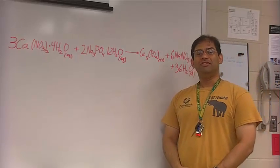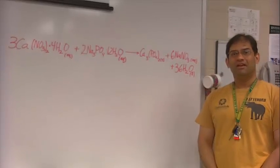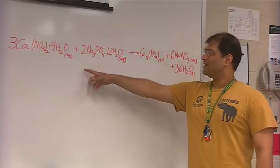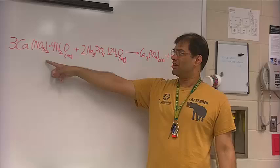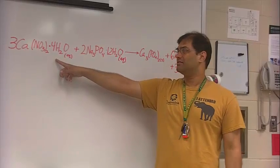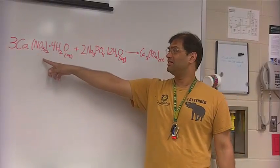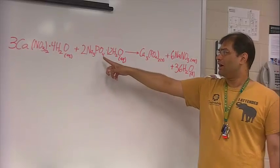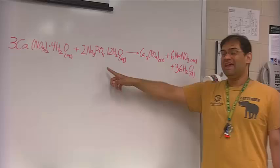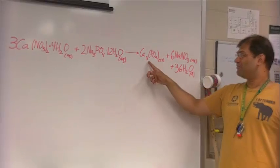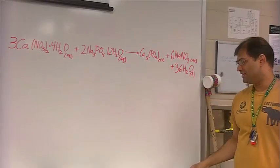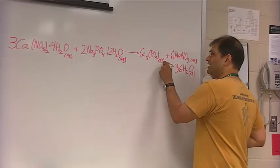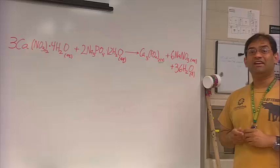In this lab, you will be determining the limiting reagent of the reaction. This is the reaction that you will perform. You'll take some calcium nitrate tetrahydrate, so four waters are complexed to this, react it with some sodium phosphate. There's 12 waters attached to this. And that will react to form calcium phosphate.